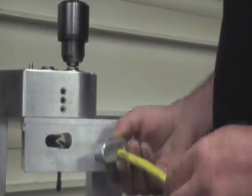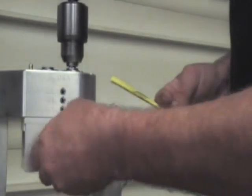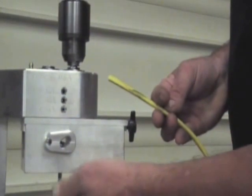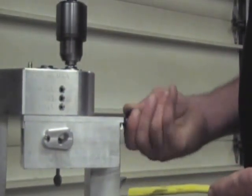Here we are demonstrating stripping the outer sheathing from flat Romex cable. Adjust the cutting wheel according to the chart supplied.